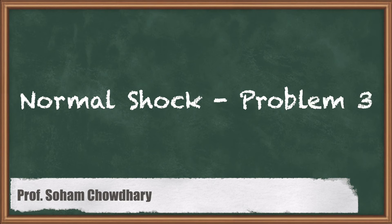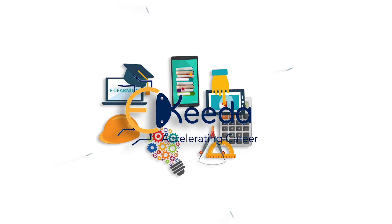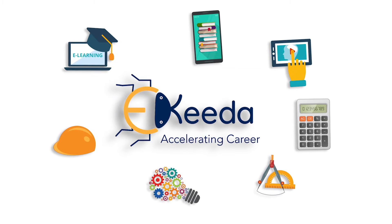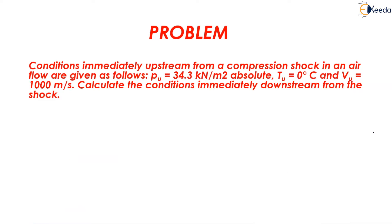Hello students. Let's start with a new topic: a problem based on shockwave from the chapter compressible fluid flow. The problem states conditions immediately upstream from a compression shock in an air flow are given as follows: P is equal to 34.3 kN per meter square absolute, T is equal to 0 degrees Celsius, and V is equal to 1000 meter per second. We need to calculate all the conditions immediately downstream from the shock. P, T, and V are given with subscript U, denoting upstream values.